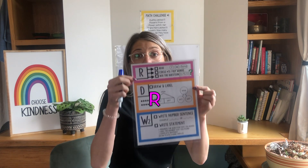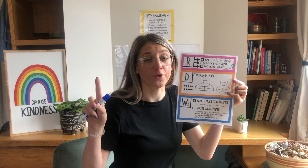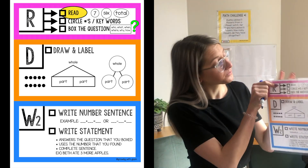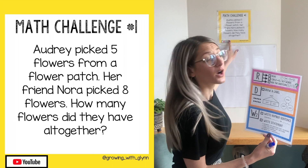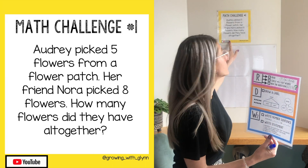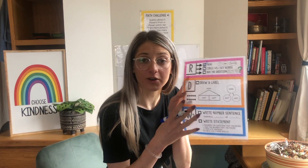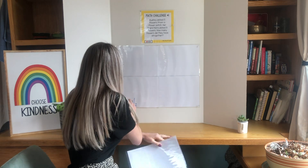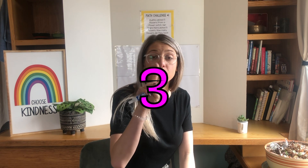Our first letter is the R. In order to cross out the R, you have to star the R, which means you have to put three lines through it because there are three different things you have to do before you can move on to the next letter. The first thing you need to do is read. Audrey picked five flowers from a flower patch. Her friend Nora picked eight flowers. How many flowers do they have all together? Now I can check off my first box in the R and put my first line through it.